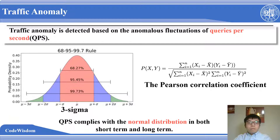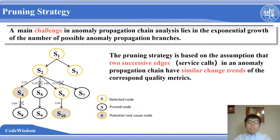A main challenge in anomaly propagation chain analysis lies in the exponential growth of the number of possible anomaly propagation branches. So we designed a pruning strategy in our approach. The pruning strategy is based on the assumption that two successive edges in an anomaly propagation chain have similar change trends of the corresponding quality metric. In this way, we can speed up the efficiency for our approach.